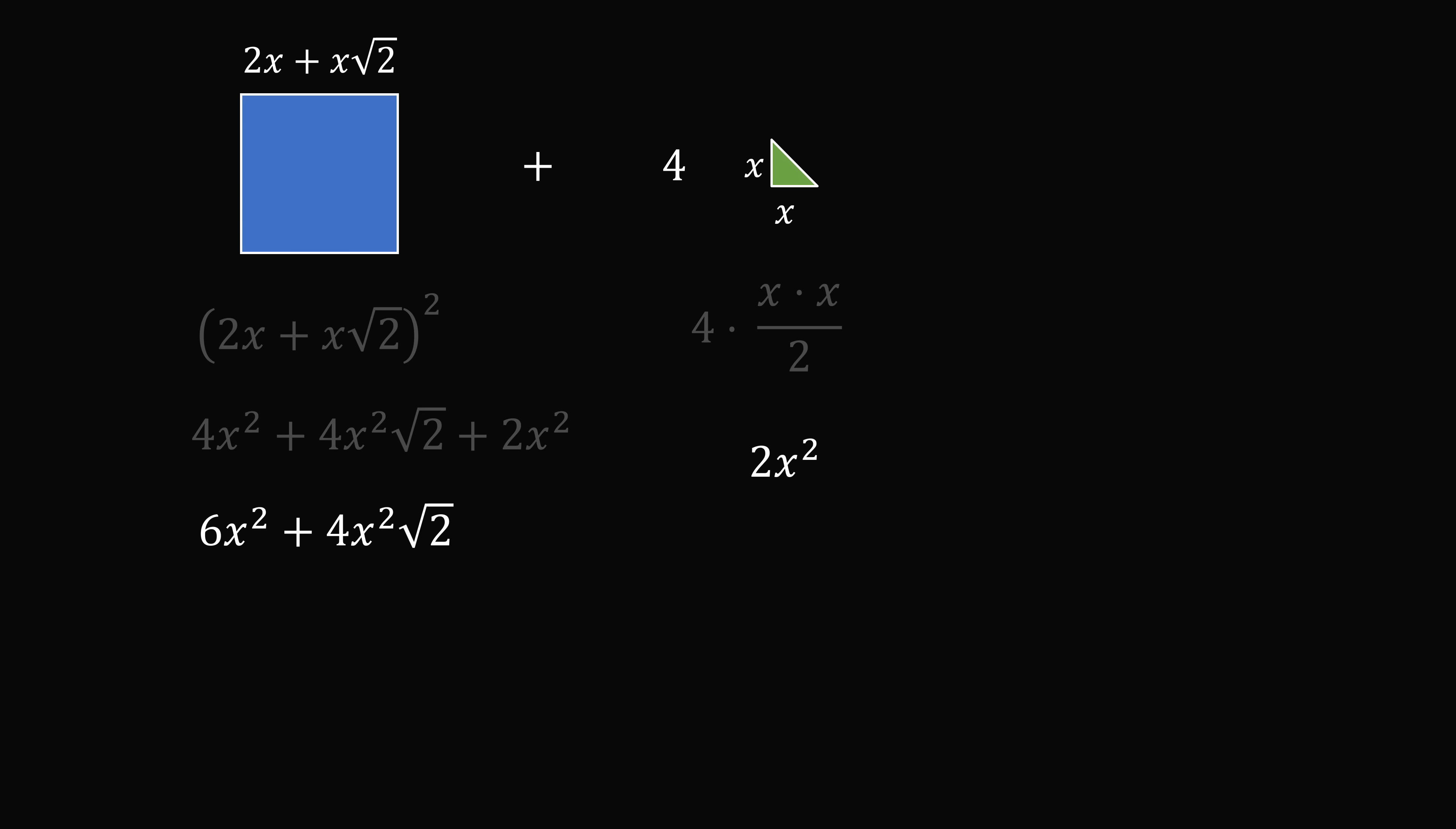We now want to add these areas. We have 6x squared plus 4x squared root 2 plus 2x squared. This equals 8x squared plus 4x squared root 2. We can factor out 4x squared, and we multiply this by the term 2 plus root 2.